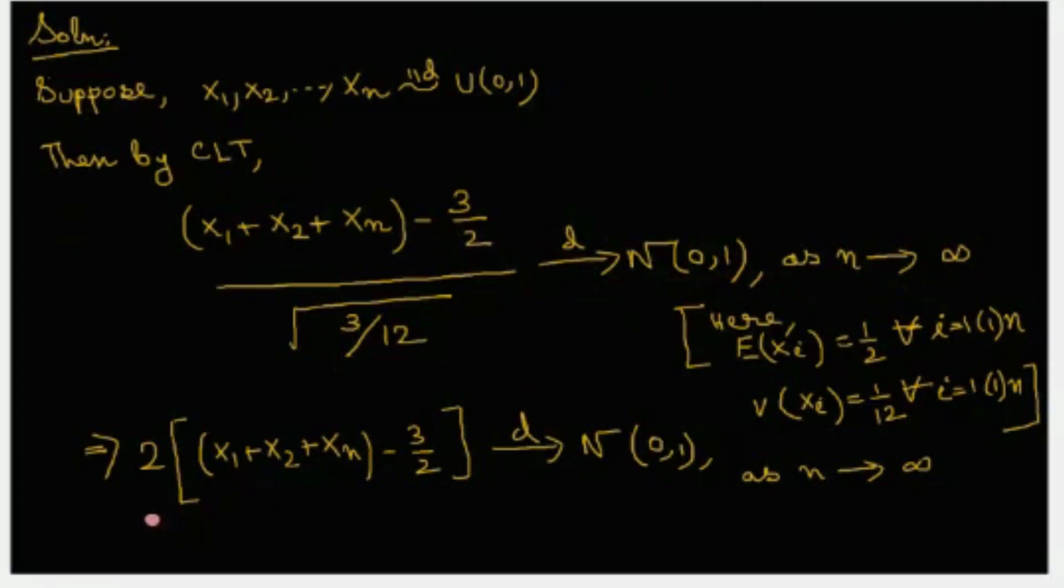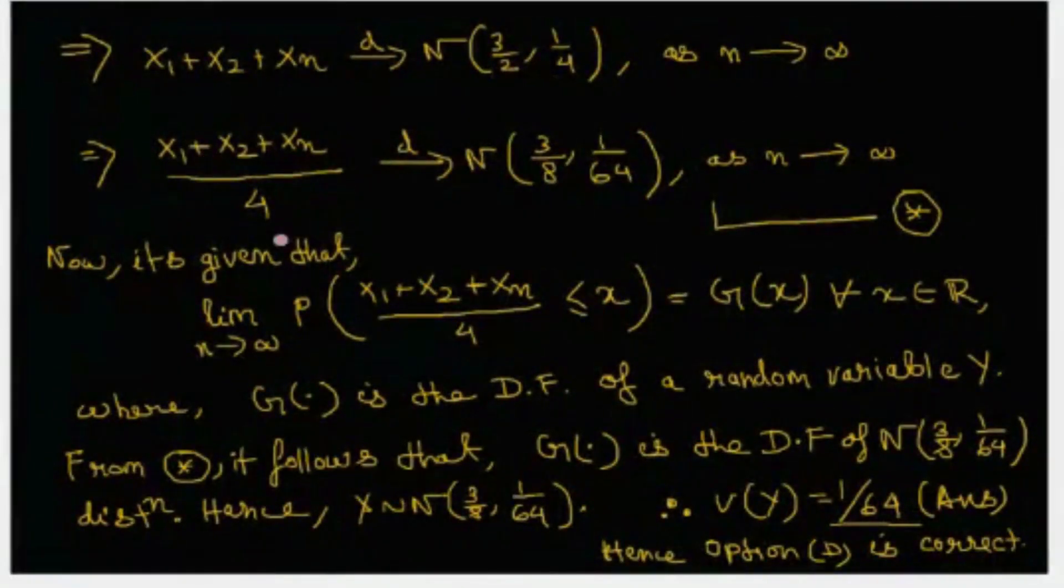Which can be written as 2 times (x1 plus x2 plus xn minus 3/2) converges in distribution to normal 0,1 as n tends to infinity. Therefore, x1 plus x2 plus xn converges in distribution to normal 3/2, 1/4 as n tends to infinity. Dividing by 4 we get the asymptotic distribution of (x1 plus x2 plus xn)/4 which is normal 3/8, 1/64.